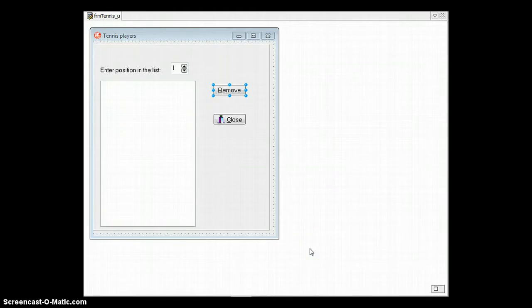Now let's look at the code. Over here we've got an array of tennis player names, and we are going to click on what position we want to remove. Then we click on the remove, and that person's name will be removed from the array, and we will display the results.